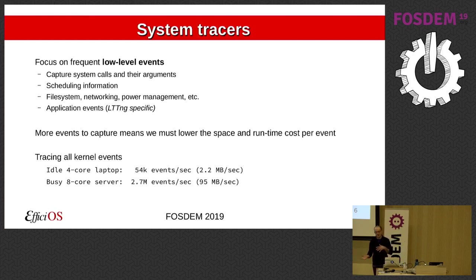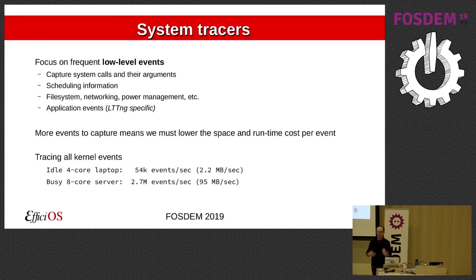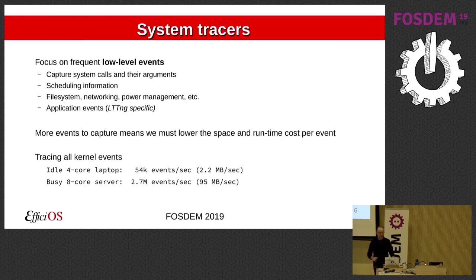The big difference is when people think of system tracers like LTTNG. We're more in the low-level events that are very, very frequent. For the kernel tracer, our goal is to capture system calls and their payload — we can have thousands of them every second. We also trace scheduling information, tracking every task running on every CPU at any given time, plus file system activity, networking activity, power management events, and so on.